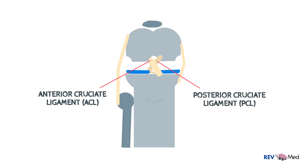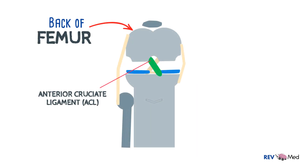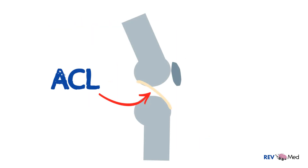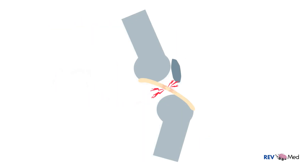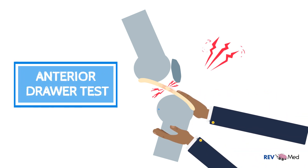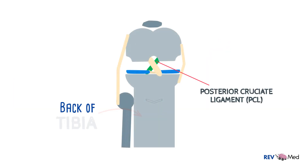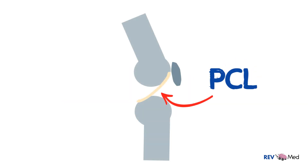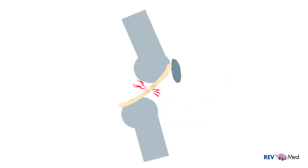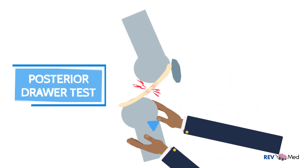The ACL and PCL are named based on where they attach onto the tibial bone. The ACL runs on the back of the femur and attaches to the front of the tibia — hence anterior, because it's in front of the tibia. The ACL prevents the tibia from sliding out in front of the femur; clinically we use the anterior drawer test to test its integrity. The PCL runs to the posterior of the tibia — hence posterior cruciate ligament. The PCL prevents the tibia from going behind the femur and its integrity is examined by the posterior drawer test.